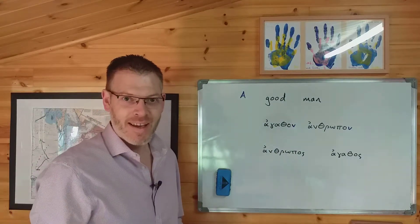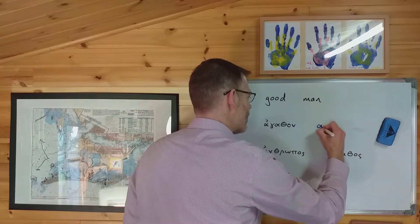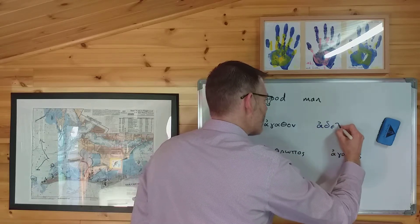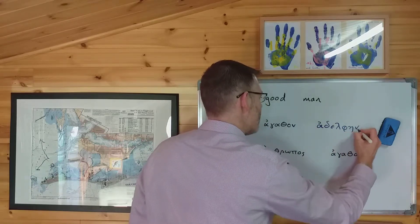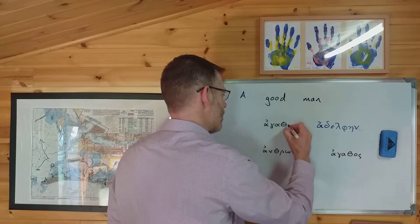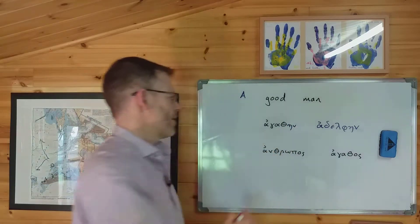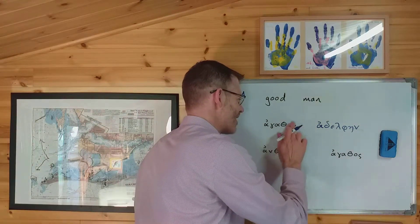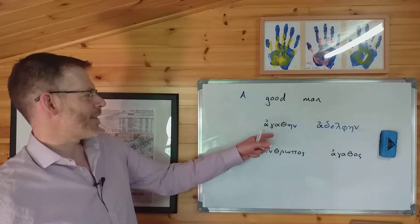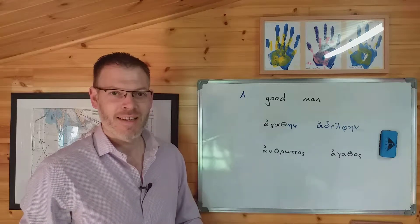And another quick reminder: if it's something feminine — for example, suppose instead of a good man it's a good sister, 'adelfén' — imagine it's the good sister who is the object of a verb, then you're going to decline the adjective, 'agathén adelfén,' declining the adjective appropriately by number, by case, and by gender.